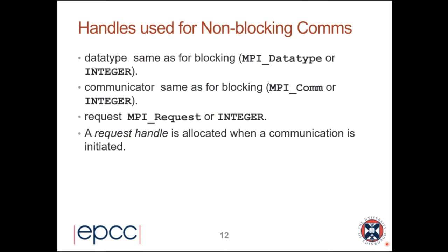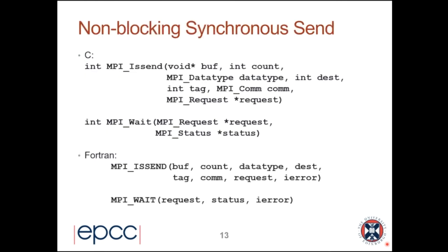Every communication you initiate has a separate request - you can reuse them once you've done the wait, but not before. Non-blocking synchronous send is called MPI_Isend - the 'I' indicates 'immediate', meaning it returns control to you immediately. The parameters are: buffer, count, datatype, destination, tag, comm, and the request is returned to you. Later on you call MPI_Wait giving it the request and you get back a status. In Fortran it's the same except the request is an integer.